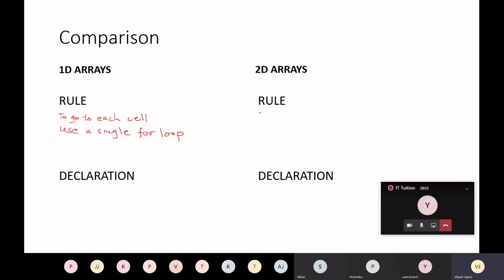In a 2D array, the rule will be, to go to each cell, use a nested, that's two, nested, two for loops.